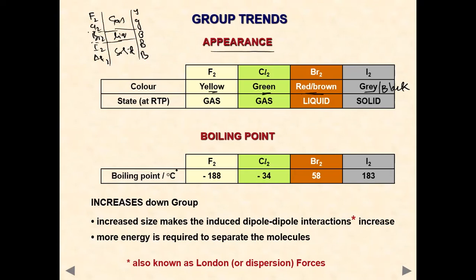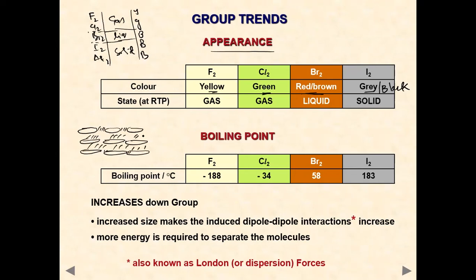The boiling points of halogens increase down the group because atomic size and number of electrons increase. These are non-polar molecules, so the intermolecular forces are temporary induced dipole forces — known as dispersion forces or London forces. As atomic size and number of electrons increase down the group, these dispersion forces become stronger, and more energy is required to separate the molecules.